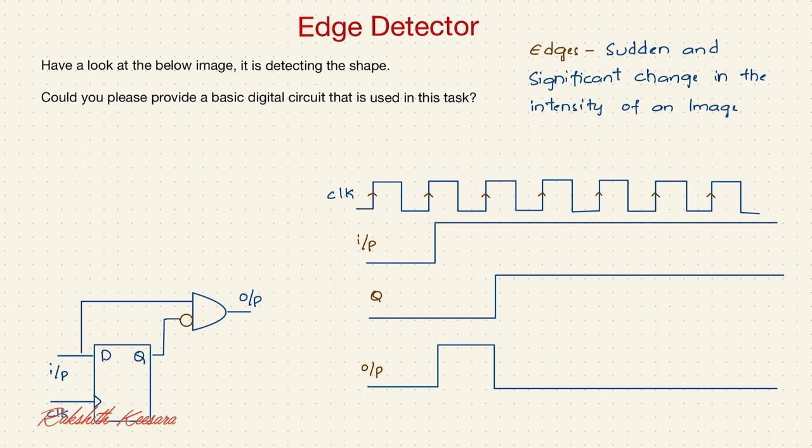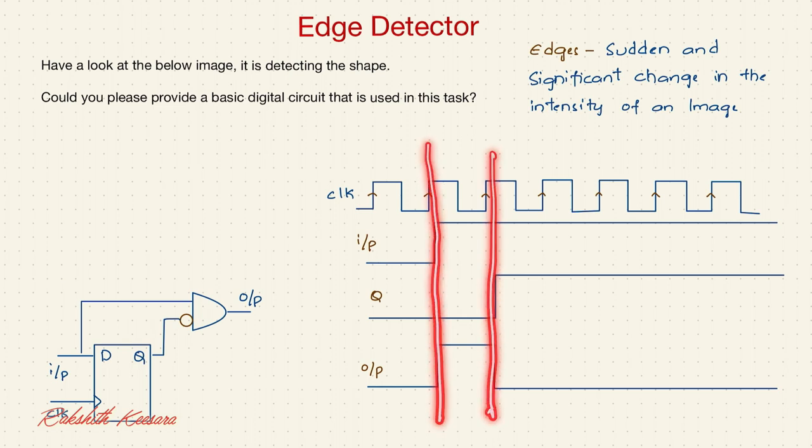So here, what I am doing is, I am shifting this input the 1 clock cycle. So Q is the shifted version of the input. And I am making a combinational logic in such a way that, here we will get the 1. Then it is getting the edge, right? Great.